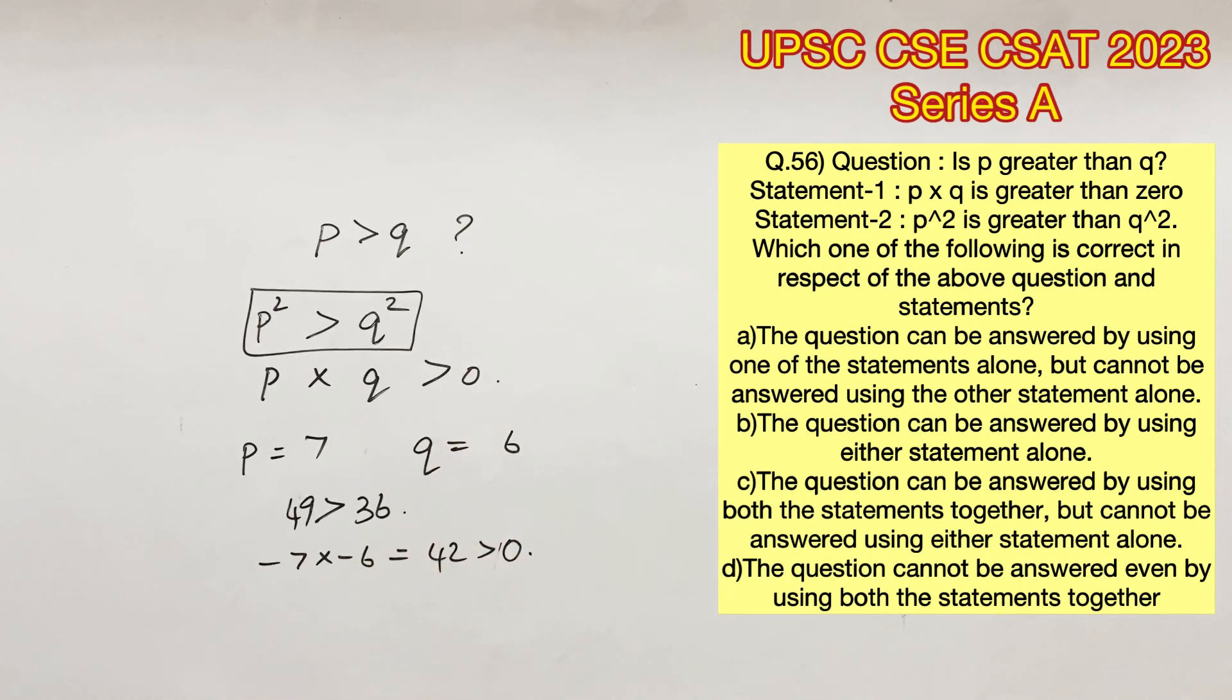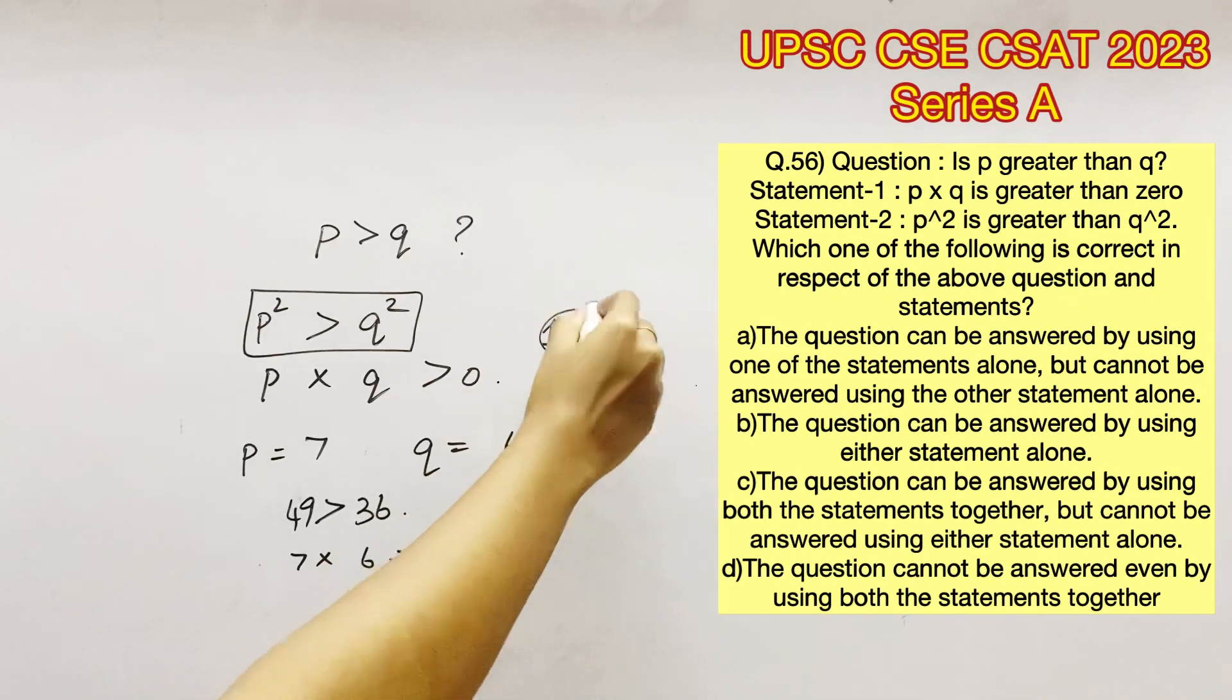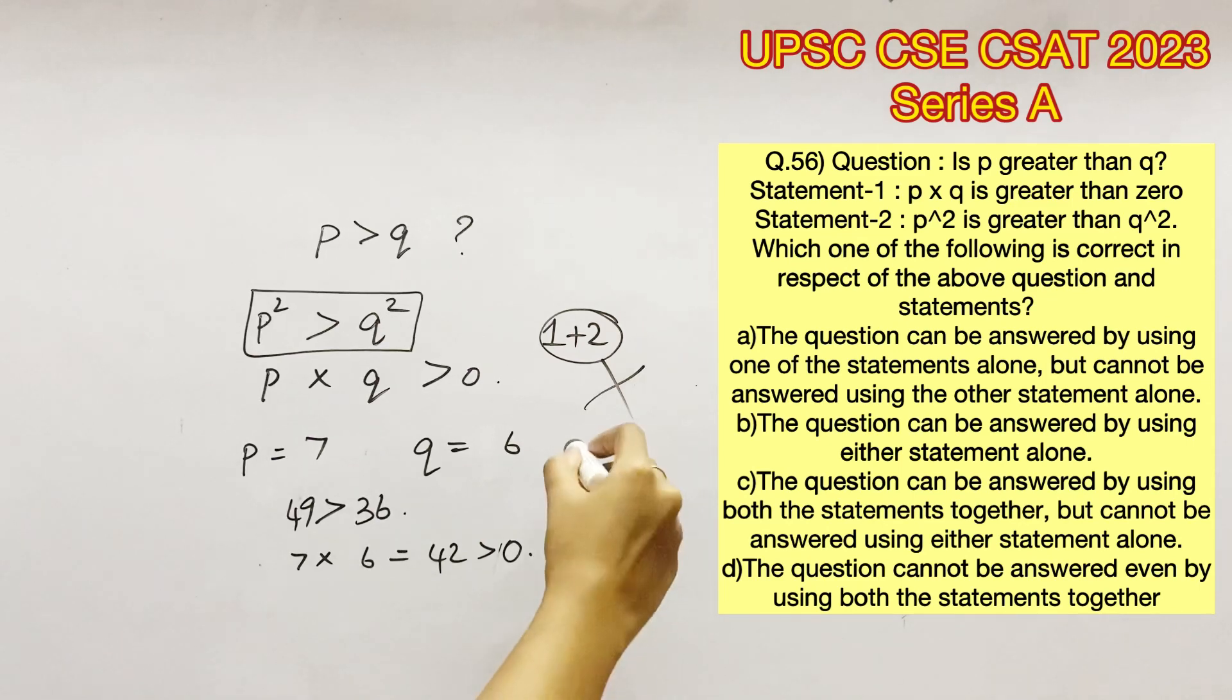Now if I consider P as 7 and Q as 6, I will have the same results but P will be greater than Q in this case. Therefore, both the statements together is not sufficient to answer this question. So option D is the right answer. Thank you.